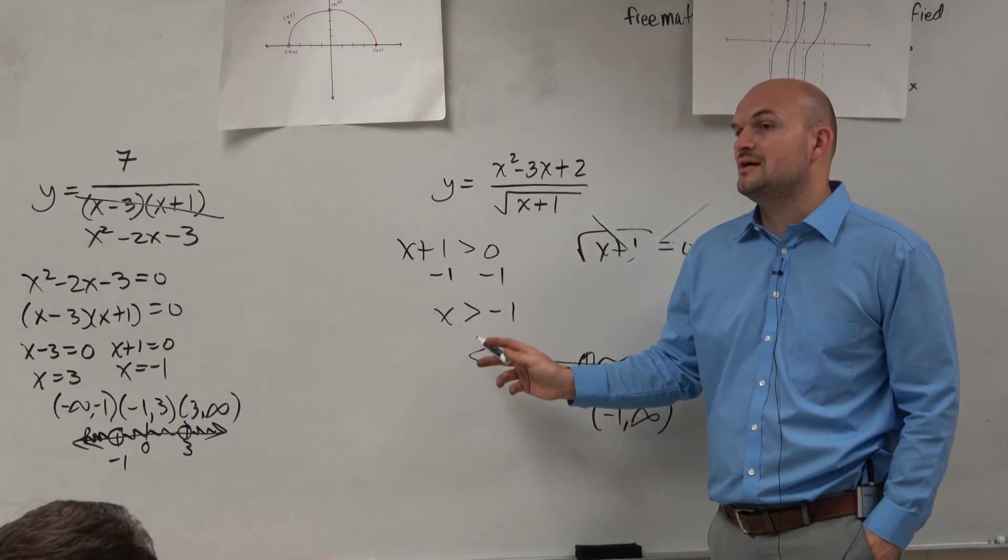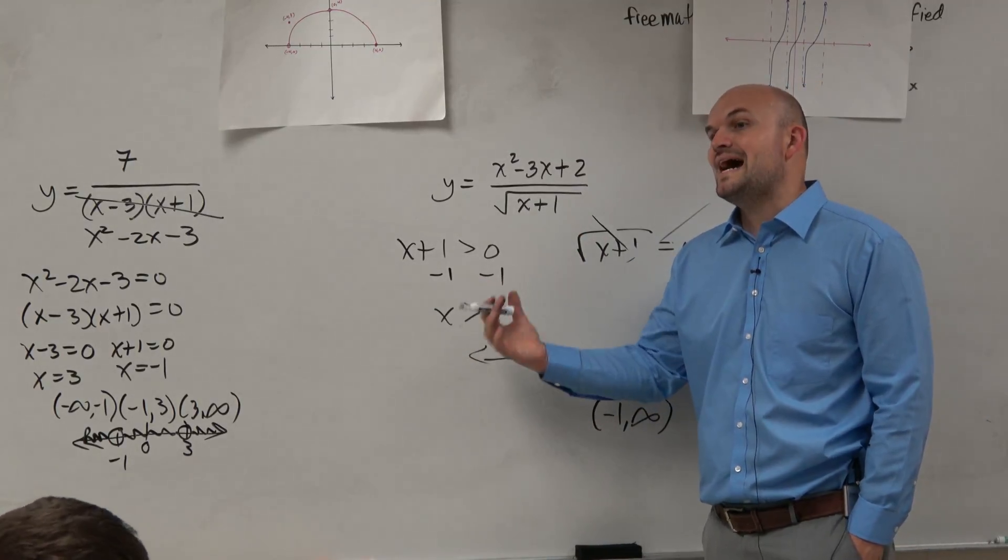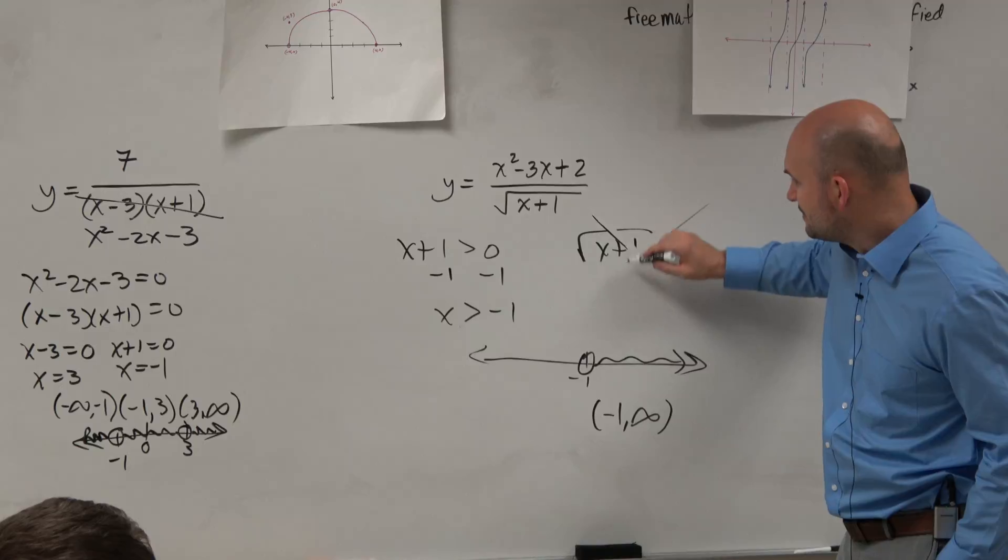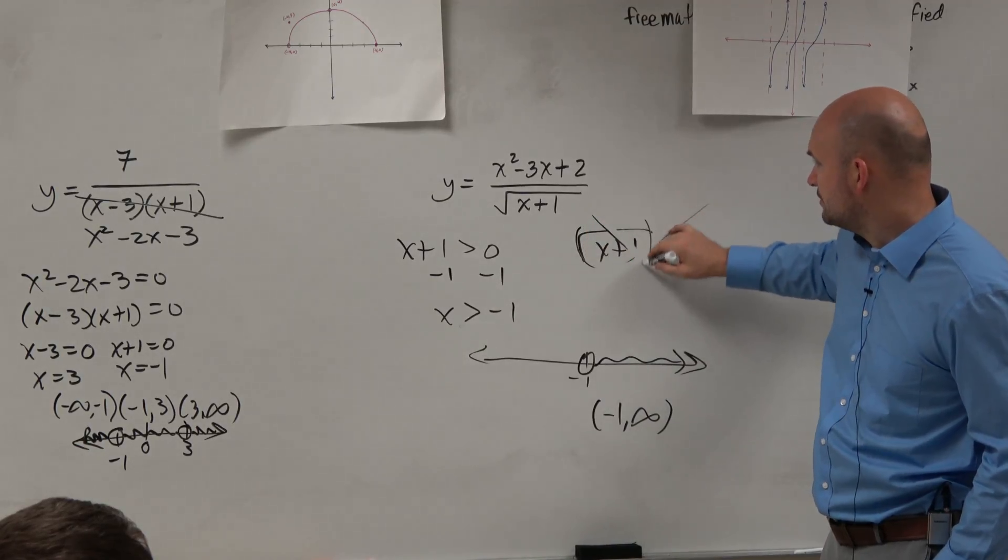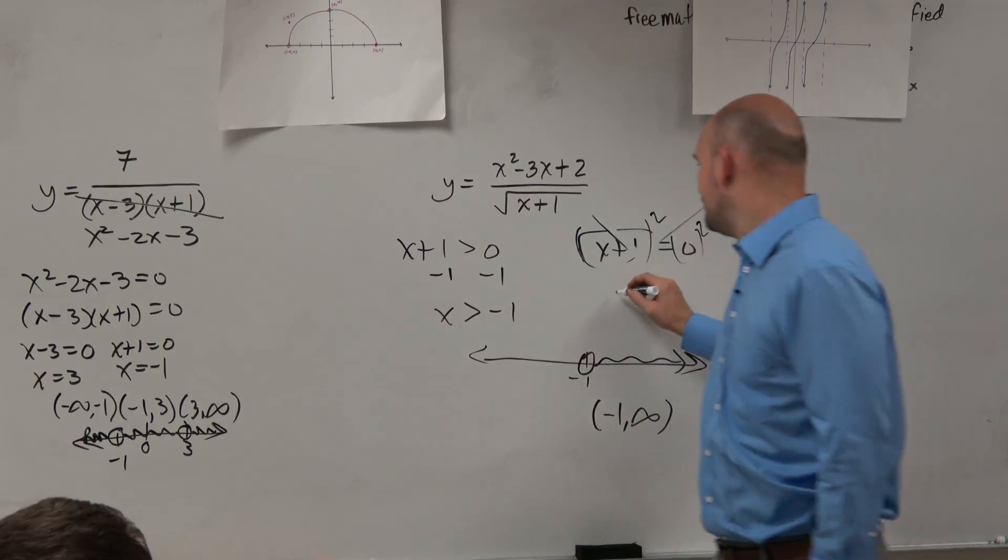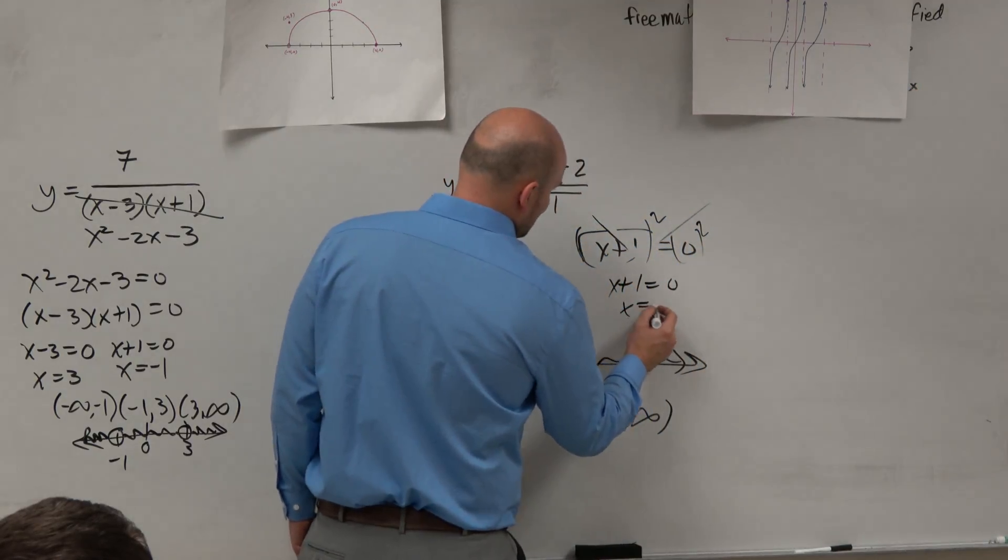So if I just take this off, that's saying I want all numbers that are larger than negative 1, not equal to. So that means I don't have to do this work over here. And if you want to do the work, squared, you get x plus 1 equals 0.